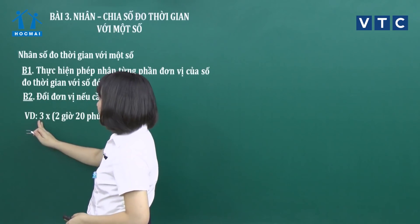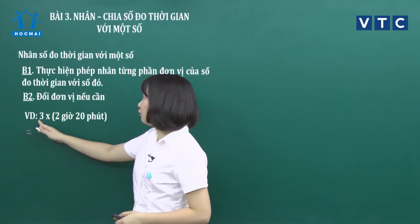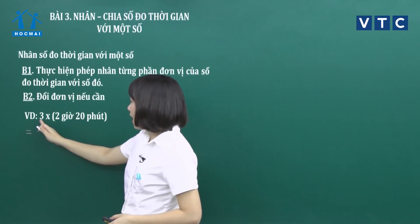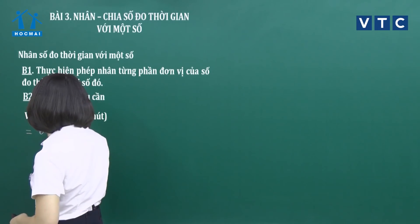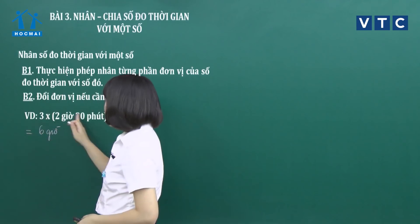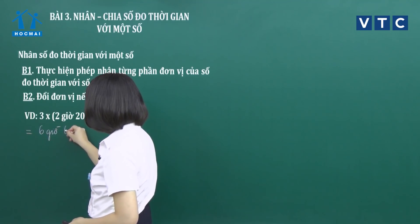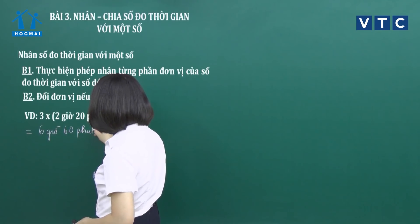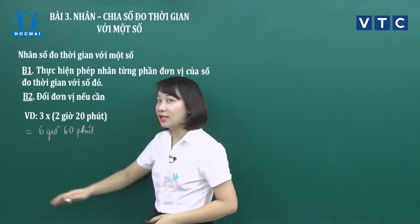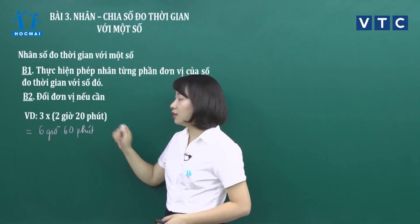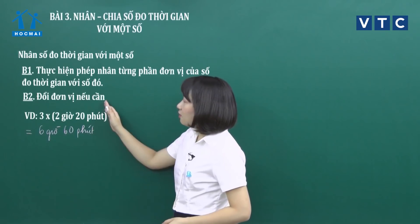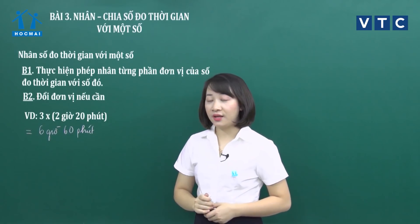Cô sẽ lấy 3 nhân với từng phần trong đơn vị đo thời gian. Tức là lấy 3 nhân 2 thì được 6 giờ. Lấy 3 nhân 20 thì được 60 phút. Vậy là chúng ta xong bước thứ nhất là nhân số đo với từng phần. Sau đó ở bước số 2 sẽ đổi đơn vị nếu cần.